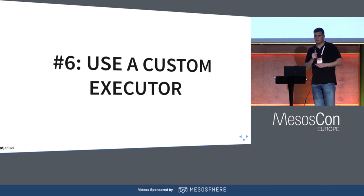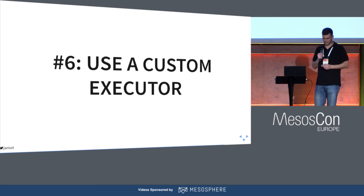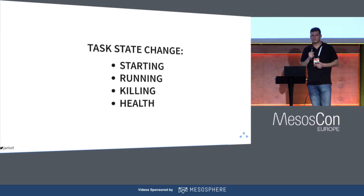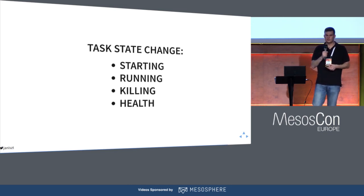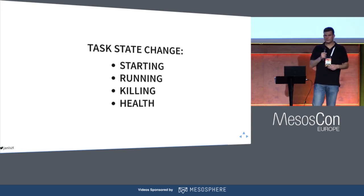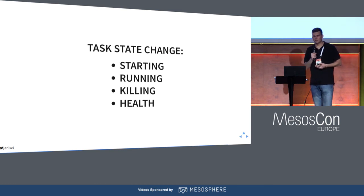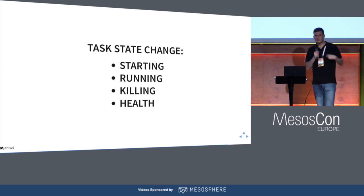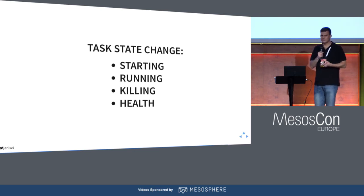Tip six is using a custom executor. I will talk about it more tomorrow. When we have a five-millisecond delay between the event that the application is created and actually registering it in Consul, the application is created or killed. With an executor, we can register our application in a service discovery solution when it starts to be healthy, for example. An executor is the actual thing taking care of the whole application or instance lifecycle. This is the way Aurora works, for example.